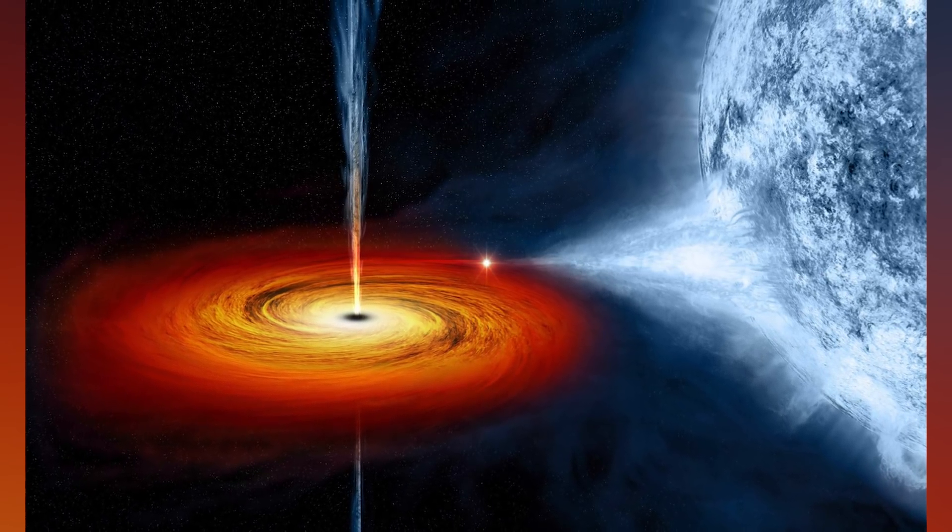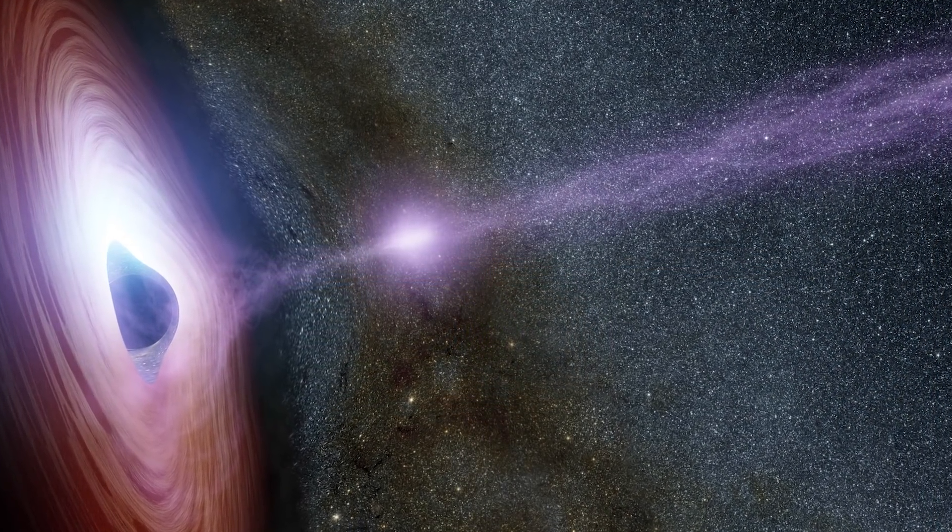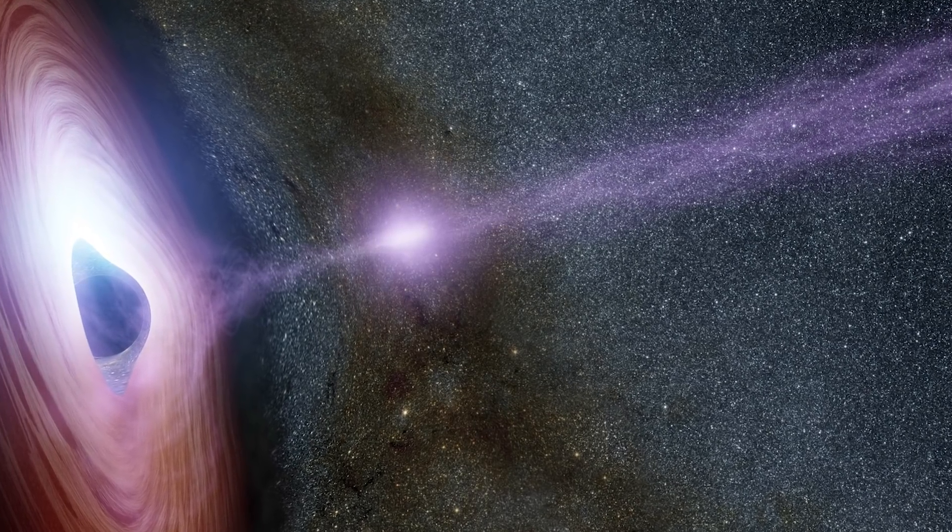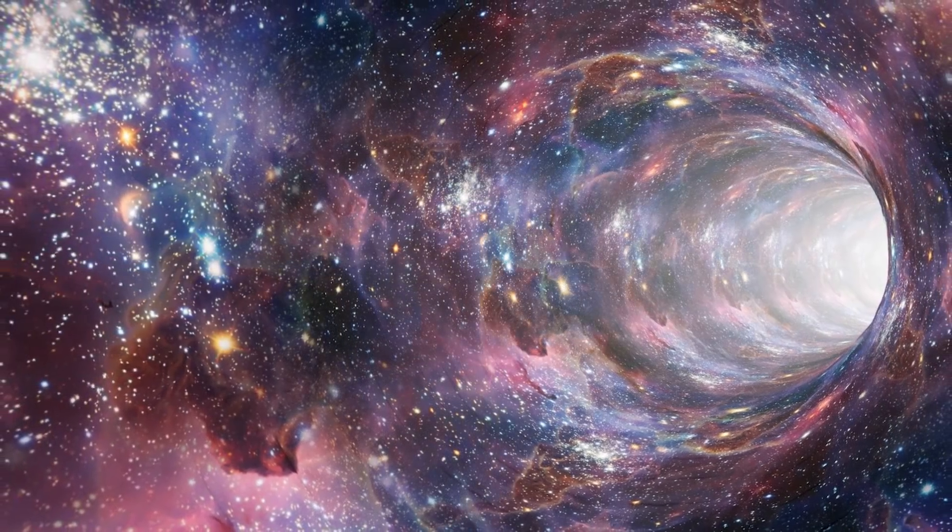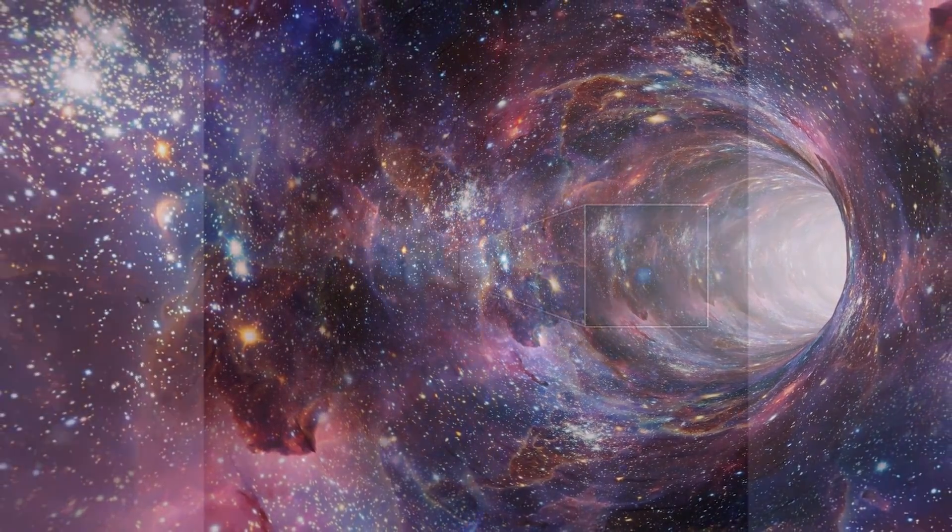Formed when an amply compact mass deforms space and time, a black hole has a defined surface known as the event horizon, which marks the point of no return. Little is known about black holes, but several scientists in history have developed their own theories about their properties and structures.